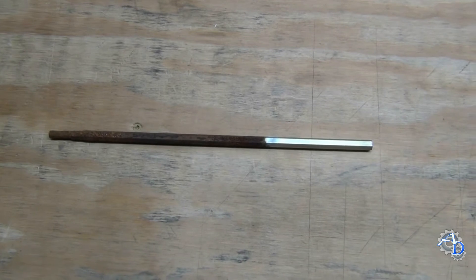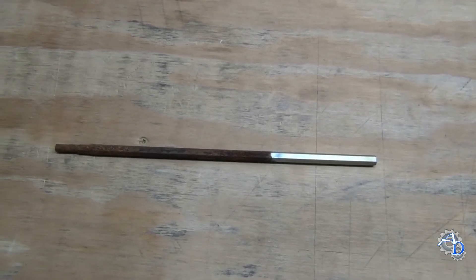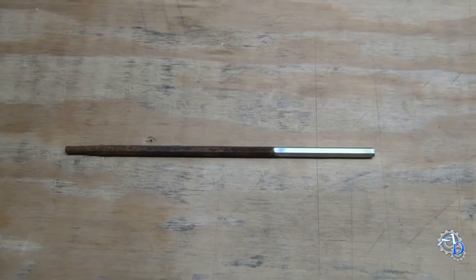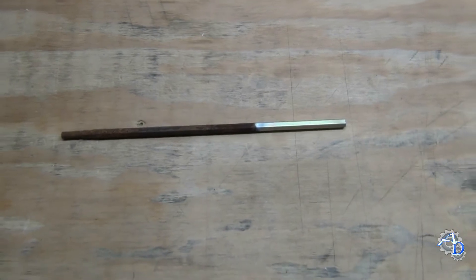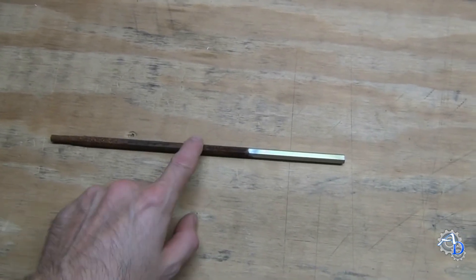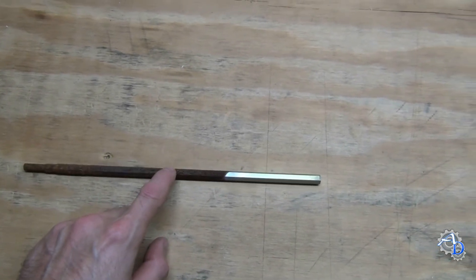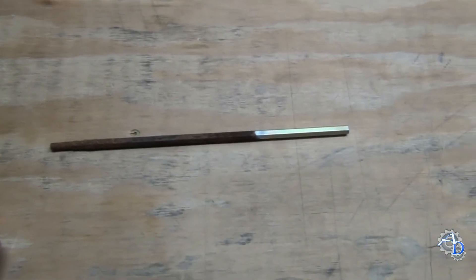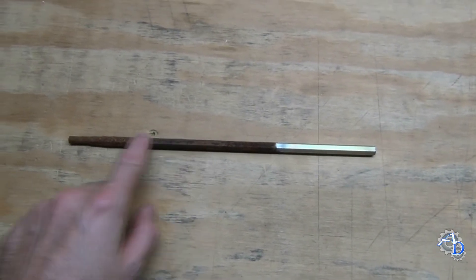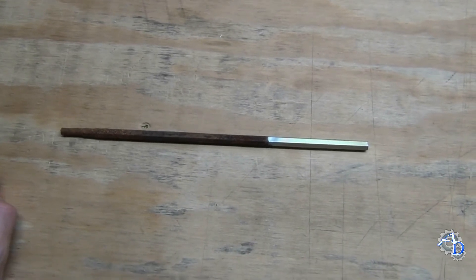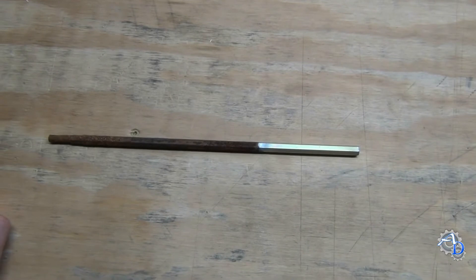A while back I did a video on do-it-yourself zinc plating or zinc plating on the cheap. It became fairly popular on YouTube for zinc plating videos. Here is the dummy part that I plated in that first video. For those of you who have seen the video, you remember this thing. It looked a little bit different because the back end is all rusty here, but for those who haven't seen that video, I will put a link in the description so you can see how to do the plating.